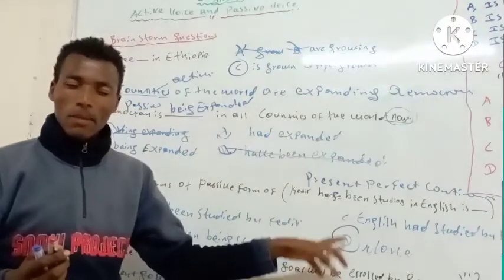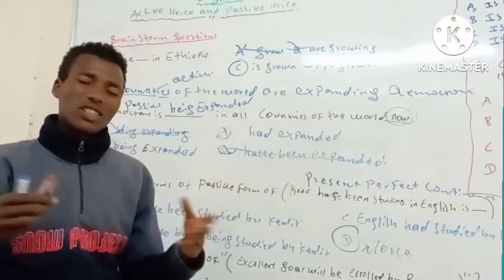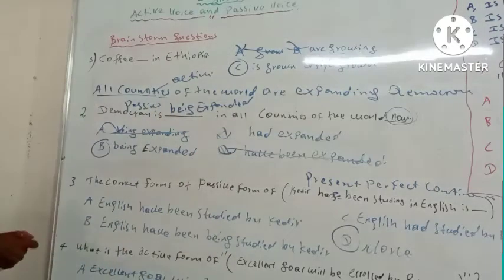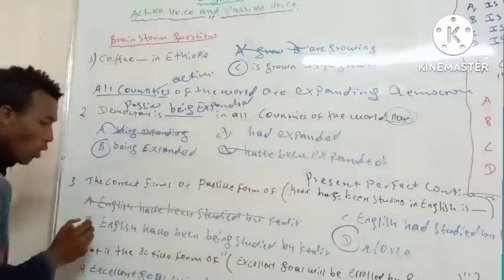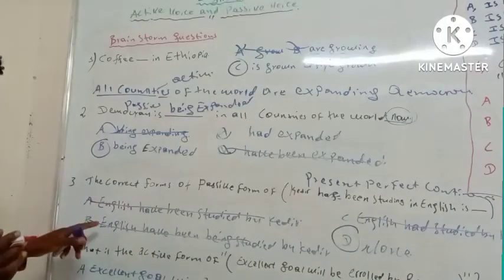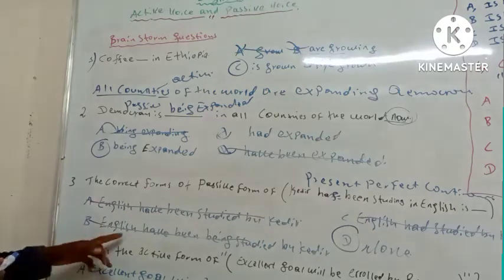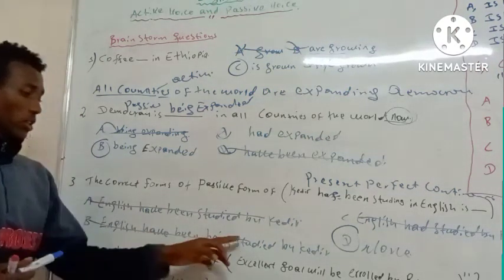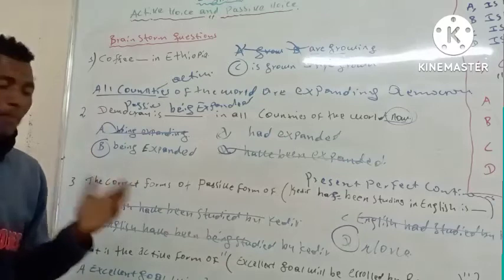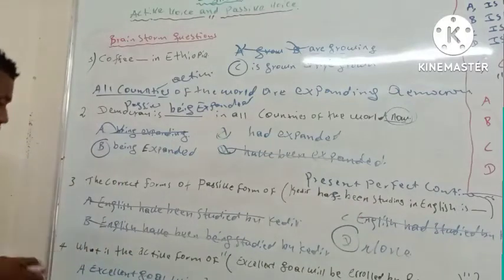For that reason, the answer is 'None.' Present Perfect Continuous, Past Perfect Continuous, Future Continuous, and Future Perfect Continuous tenses all have no passive forms — they are ungrammatical. Although you might think 'English has been studied by Kadir' seems good, it is impossible to construct passive forms of Perfect Continuous tenses.